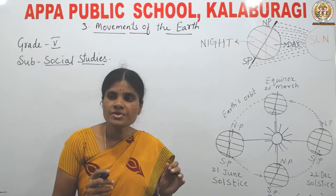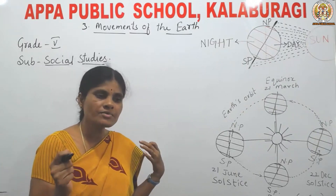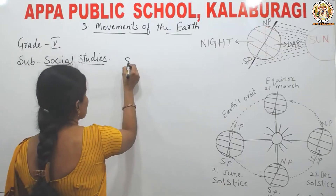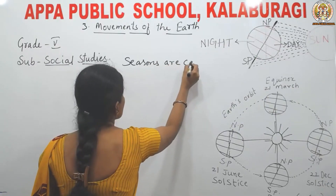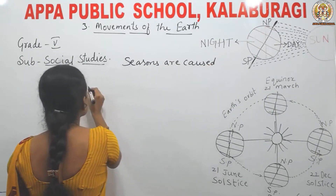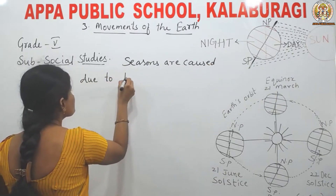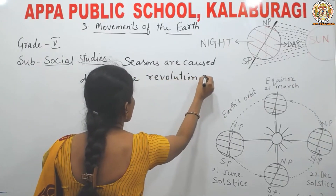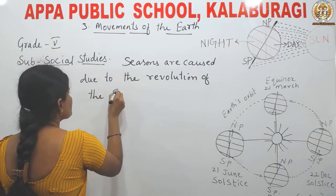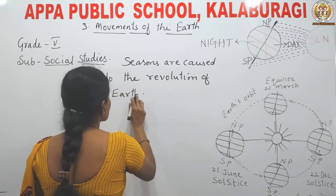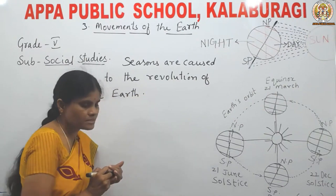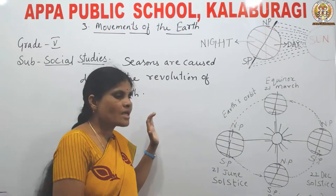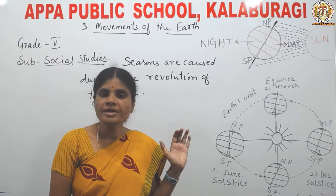We have different seasons — summer season, winter season, rainy season. Seasons are caused due to the revolution of the earth. The earth's axis is inclined at an angle of 23 and a half degrees.